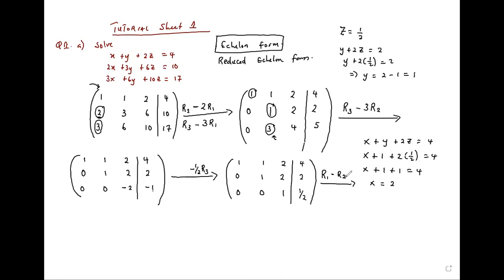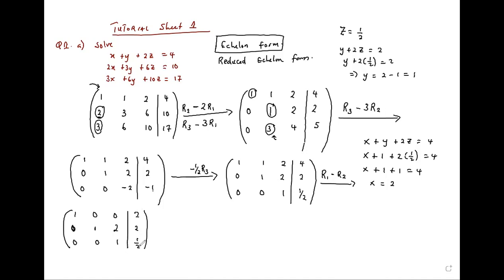We want to fix a zero there. That will give us: 1, 1 minus 1 = 0, 2 minus 2 = 0, 4 minus 2 = 2. Then 0, 1, 2, 2. And 0, 0, 1, half.